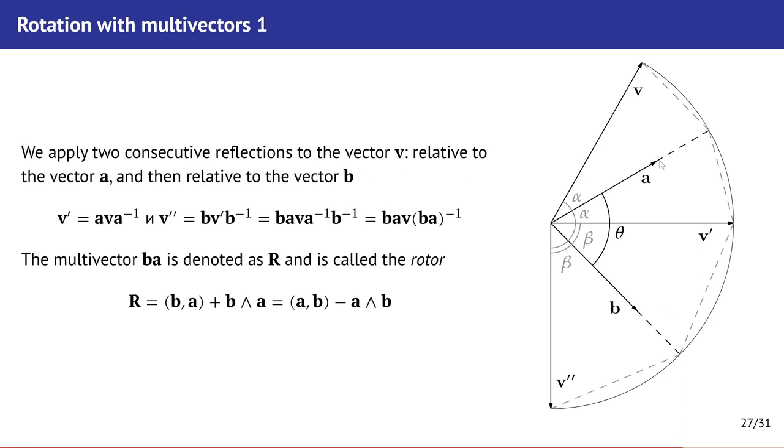Now if we make two reflections with respect to vector a and then with vector b, we see that we have a rotation of vector v. Vector v will rotate parallel to plane defined by vectors a and b. The angle of rotation will be double the angle between vectors a and b. The multiplication of b and a is denoted as R and this multivector is called rotor. If we define such multivector, it has scalar part and bivector part. We can use it to rotate any vector to any angle.